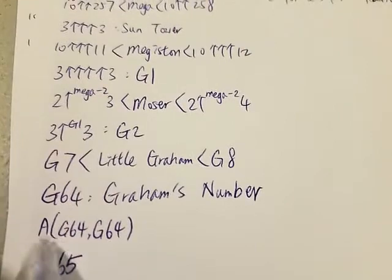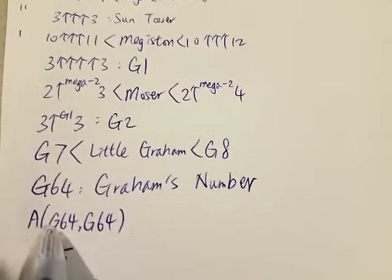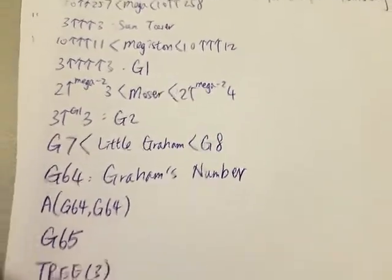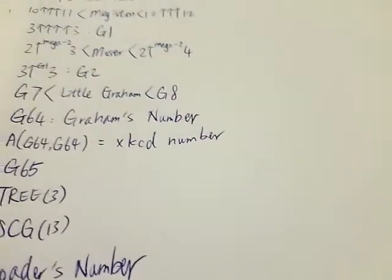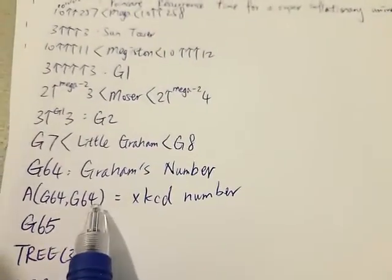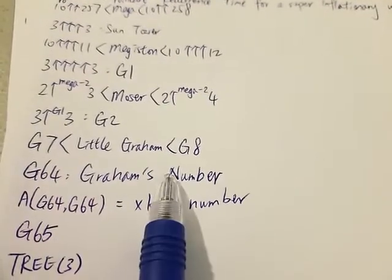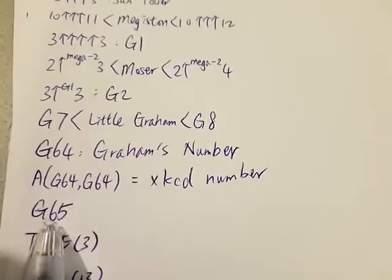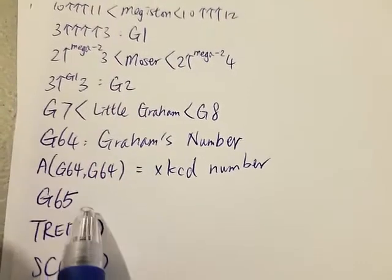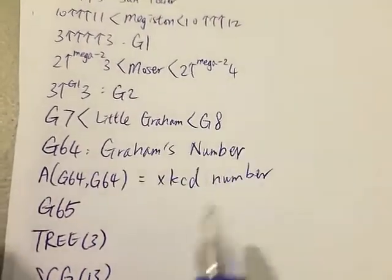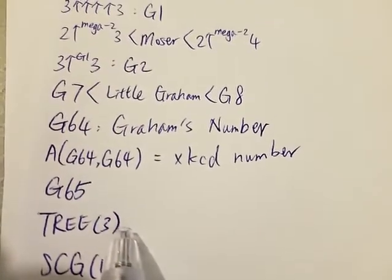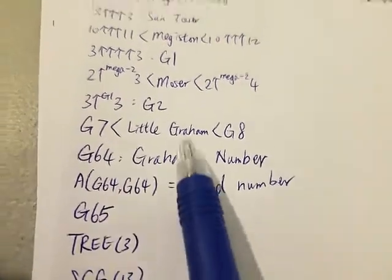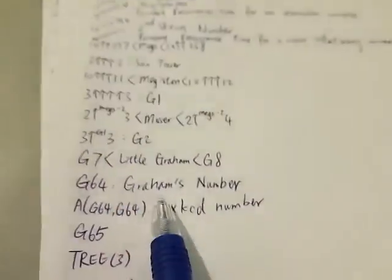Next we have A(G64, G64) — where A stands for Ackermann — also known as the XKCD number. This number is way bigger than Graham's number, but the funny part is that it's actually smaller than G65 of the Graham's function. Then we have 3↑↑↑↑3, which is way, way, way bigger than anything we've mentioned so far.